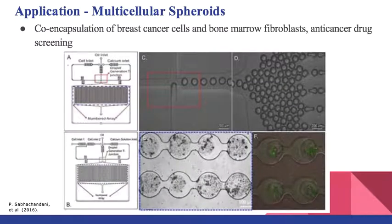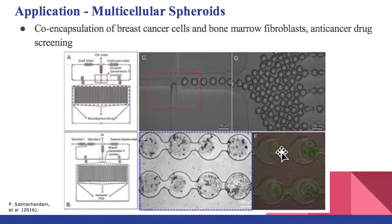Another application is multicellular spheroids. The 2D model is being replaced by the 3D model because it better mimics the in vivo microenvironment with cell-cell interactions. In this model you can see the droplets entering the docking array before gelation, with a T-junction for droplet formation, and in part F you can see the live cells stained green.